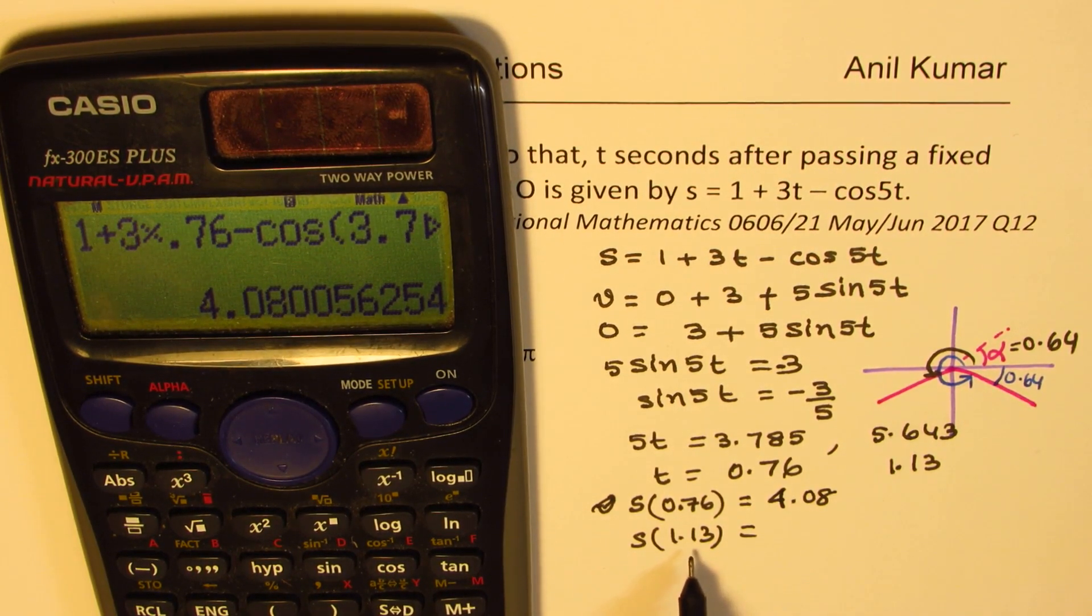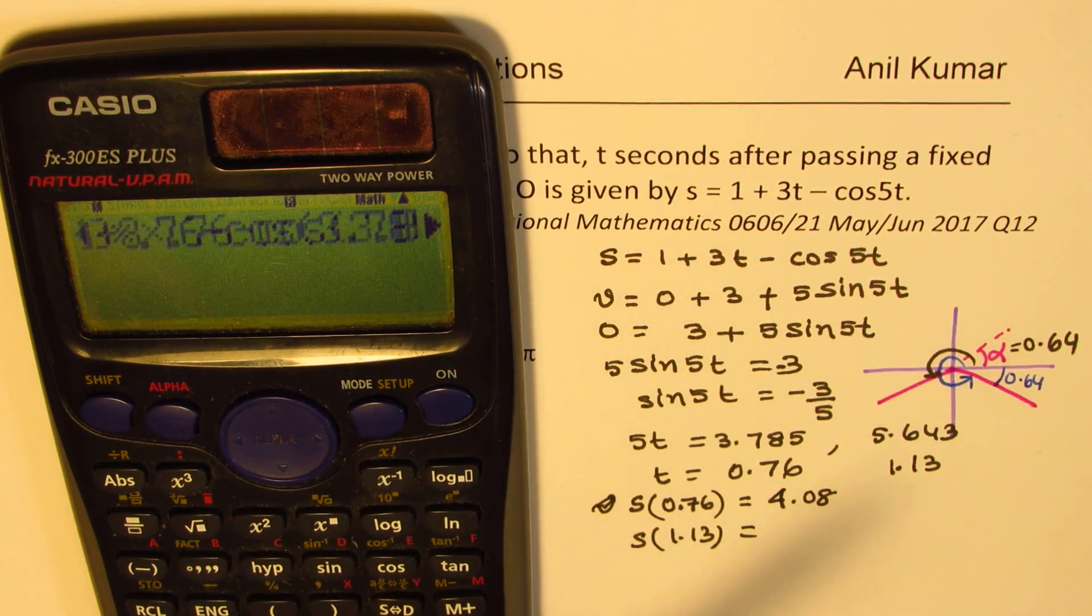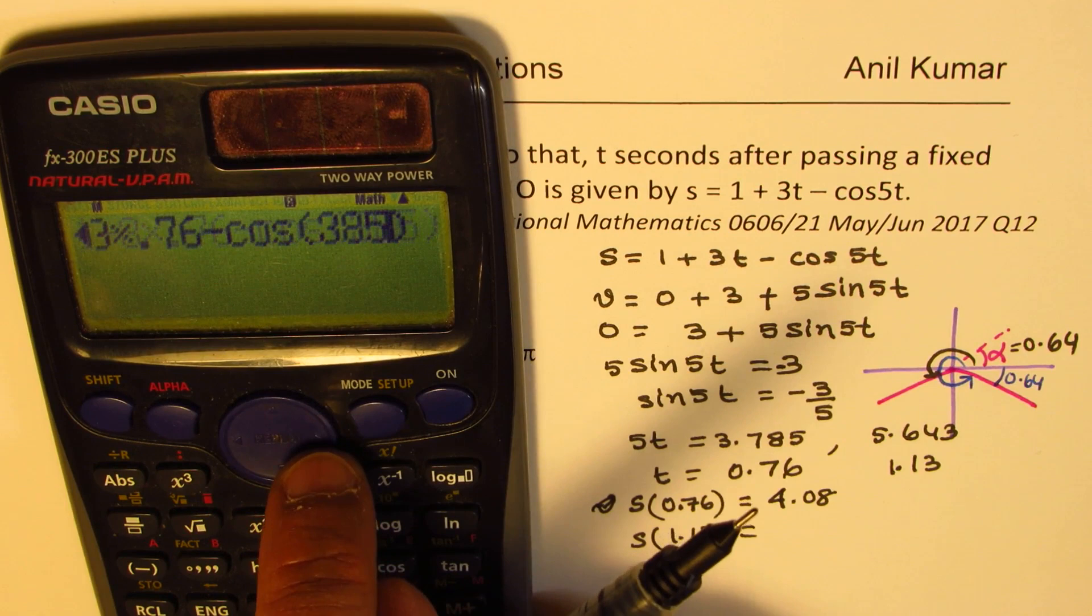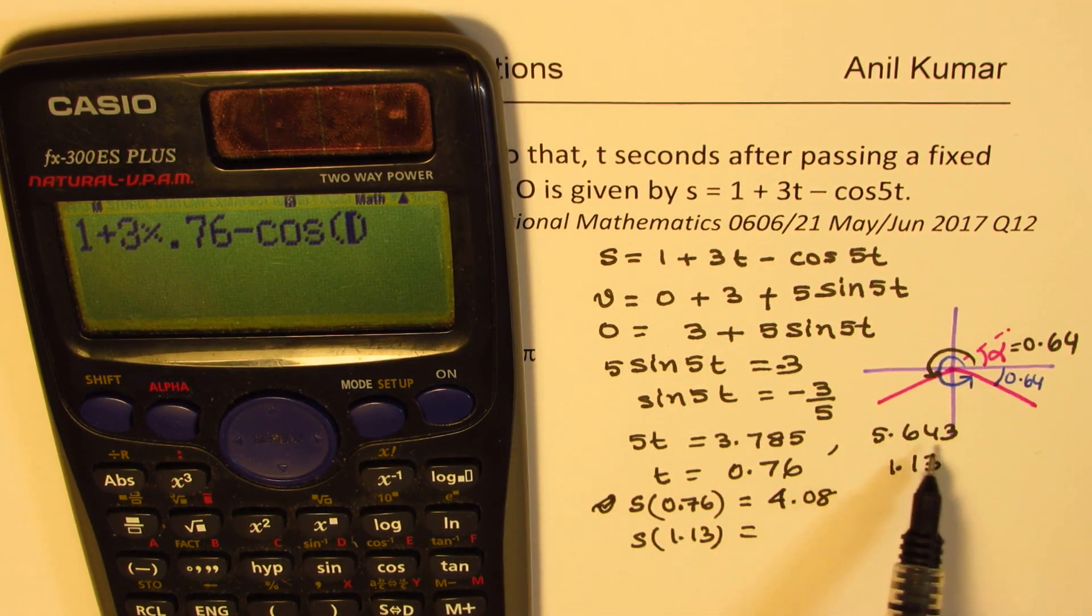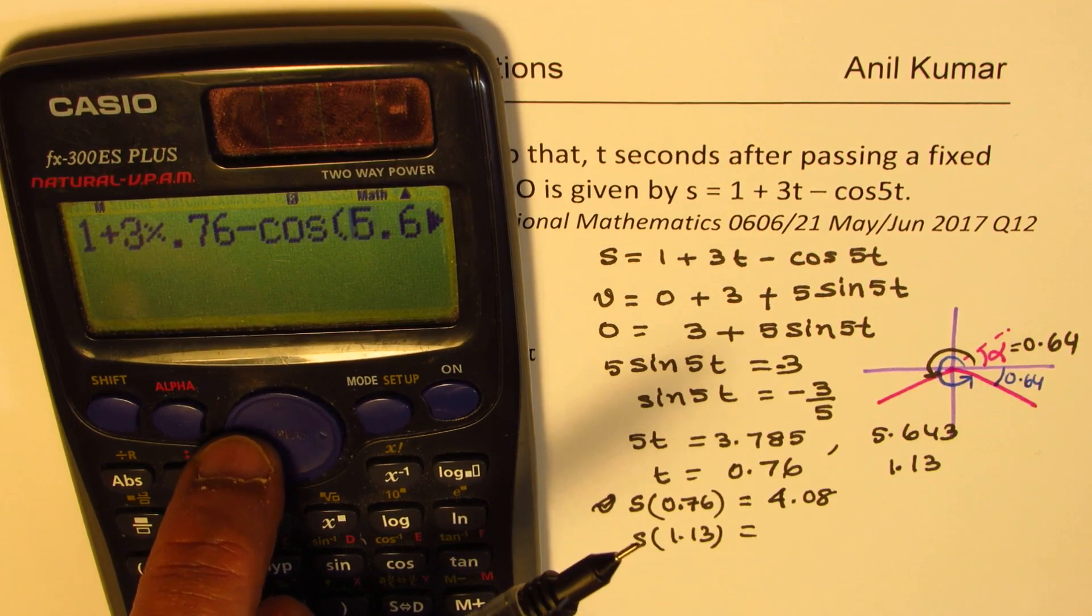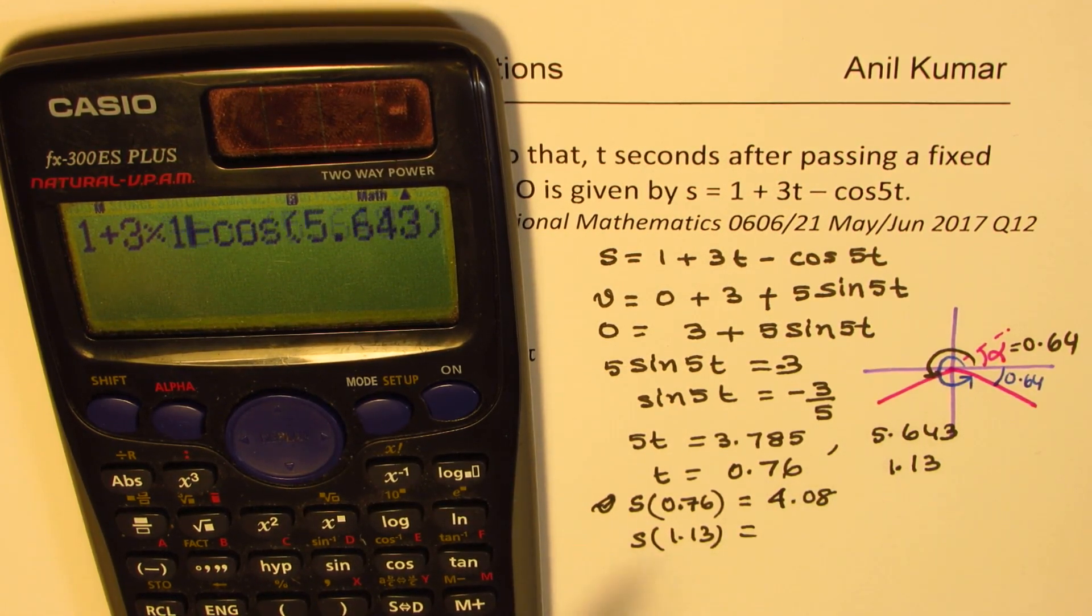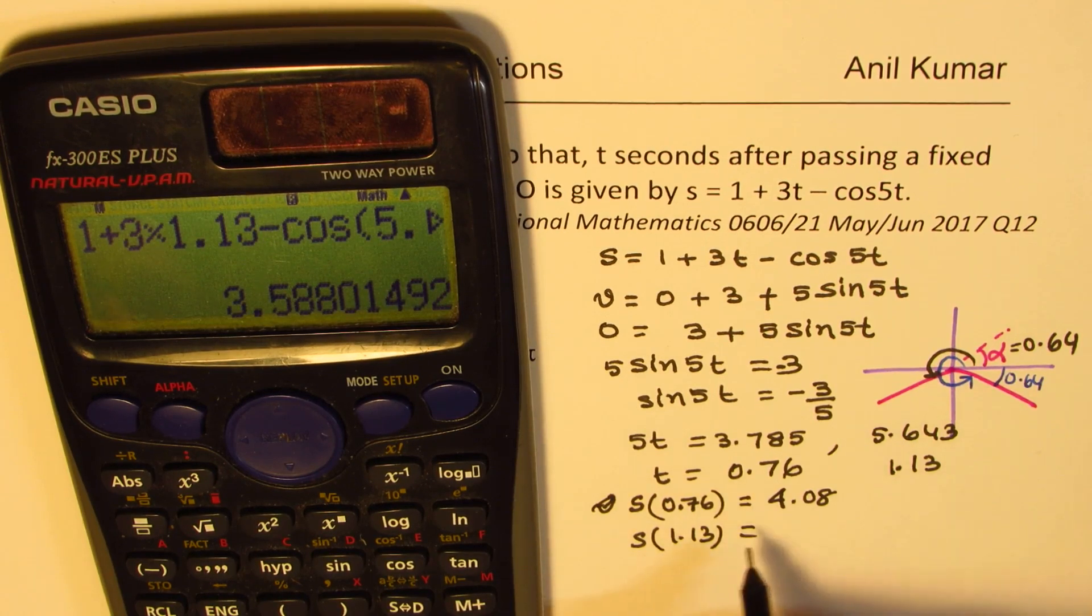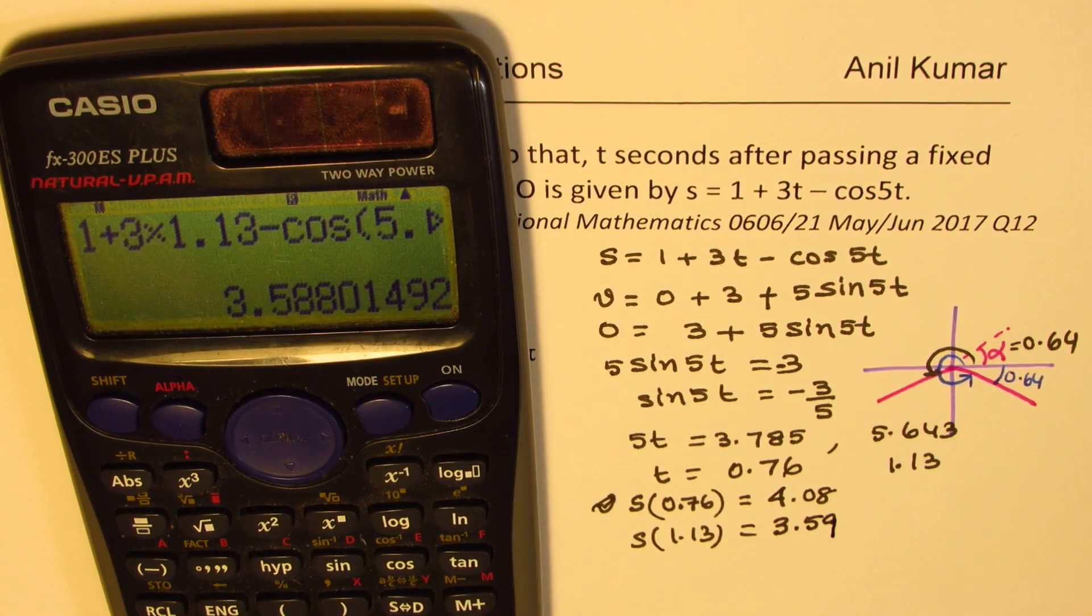Now let's calculate for the second one where 5t is 5.643. So let me just change the values there. For cos 5t I'll write 5.643, and then I'll change the value to time as 1.13 equals to. So that gives me 3.59.